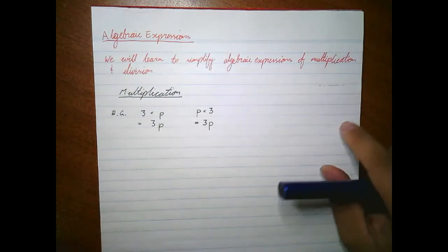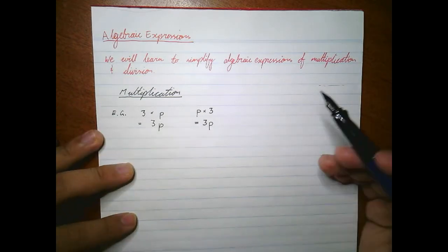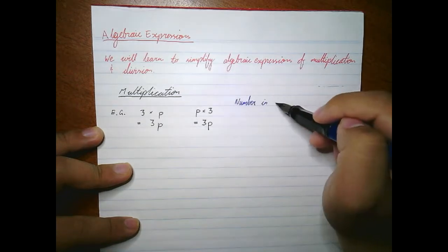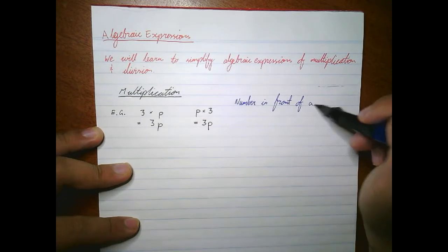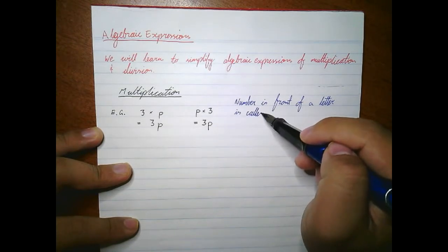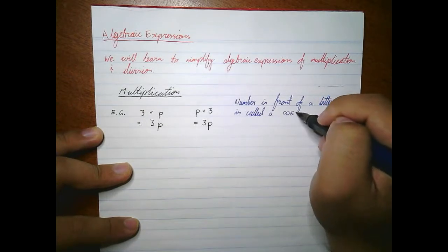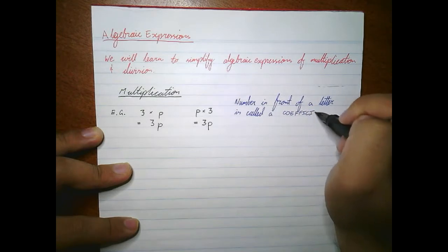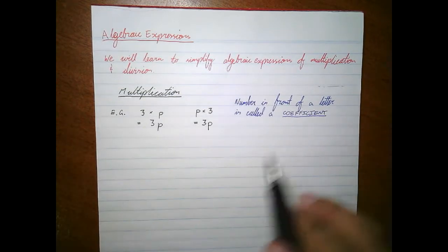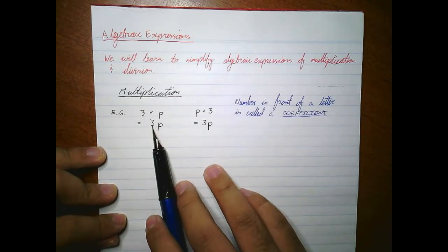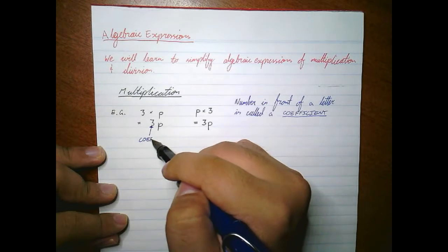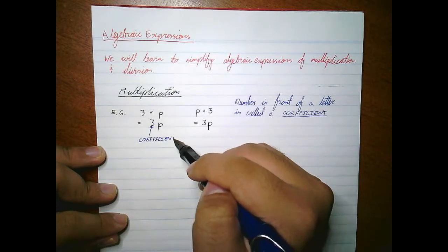This is the introduction I'd like to show you: the number in front of a letter is called a coefficient. So in this example, the coefficient of p is three — that's the coefficient. It's a special name given to the number in front of the letter.